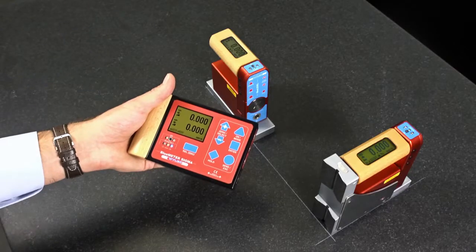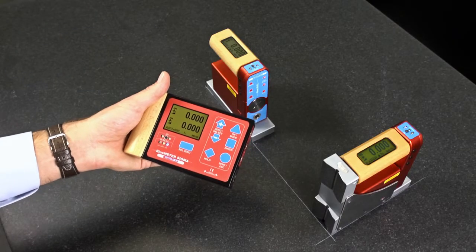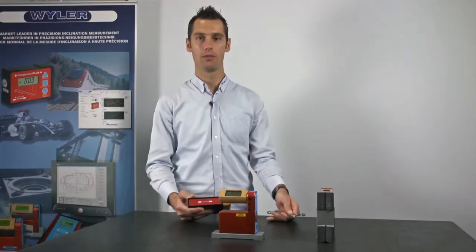As you can see, our object is now perfectly horizontal. This is a typical example for an absolute measurement where a previous reversal measurement is indispensable.